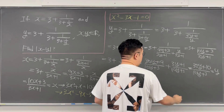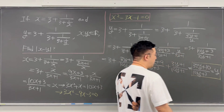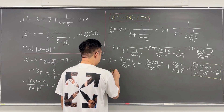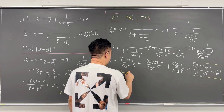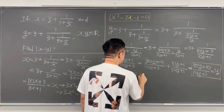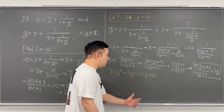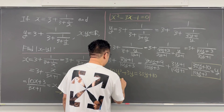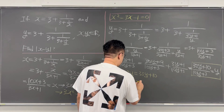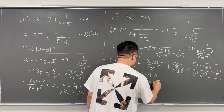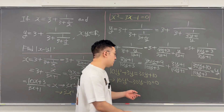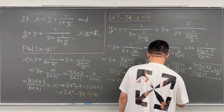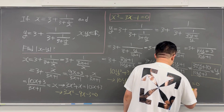If we multiply 10y plus 3 to both sides, we get 10y squared plus 3y equals 33y plus 10. Moving those terms to the left-hand side gives 10y squared minus 30y minus 10 equals 0. Dividing all terms by 10, we get y squared minus 3y minus 1 equals 0.